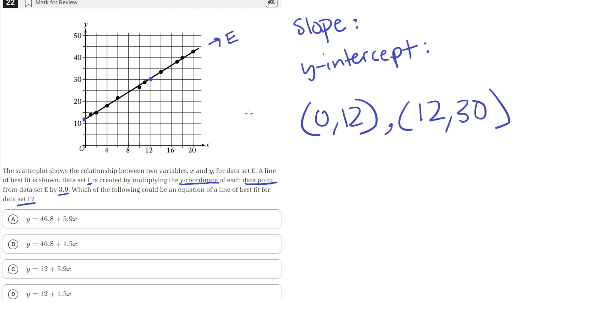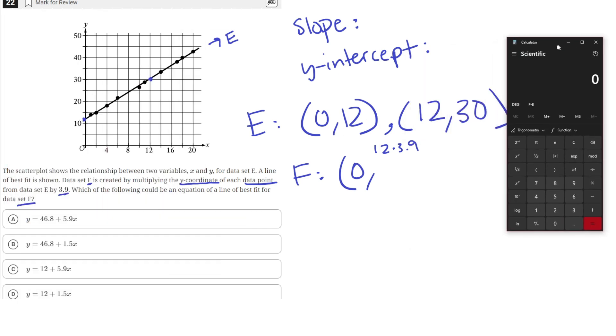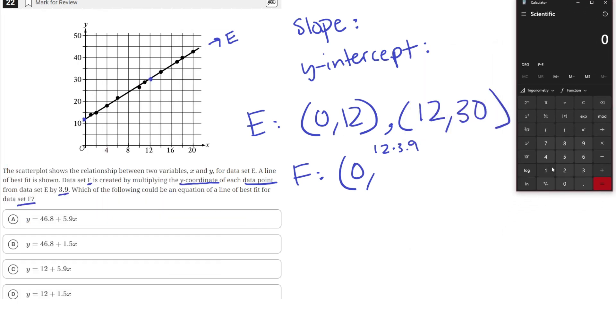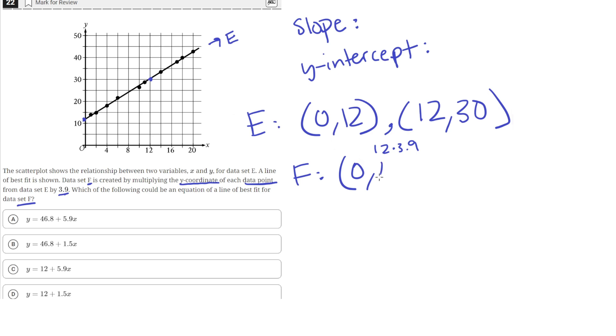So, these are the points from data set E. In data set F, they would have their Y coordinates multiplied by 3.9. So, the X coordinate would stay the same, but Y would be multiplied by 3.9. So, we'd have to do 12 times 3.9, which, if we put into our calculator, 12 times 3.9 is equal to 46.8.